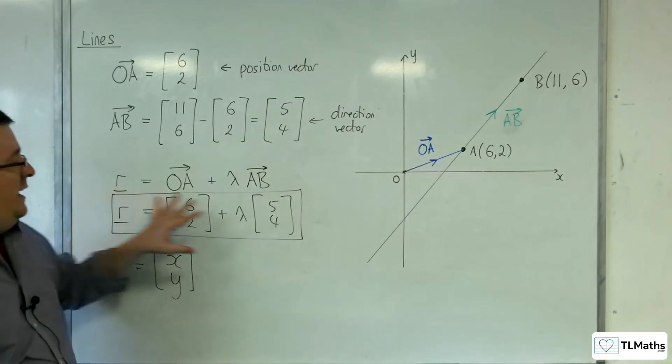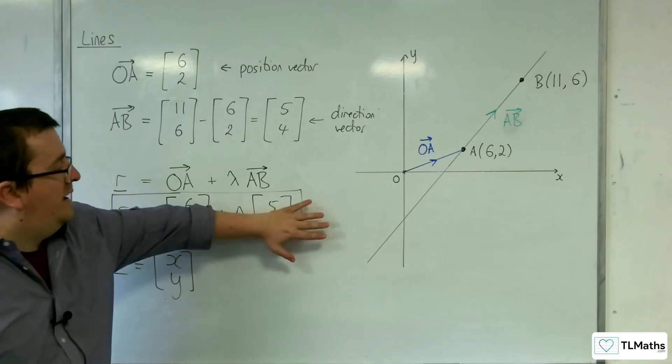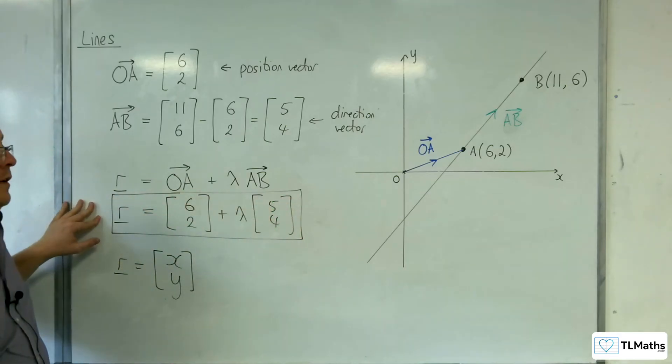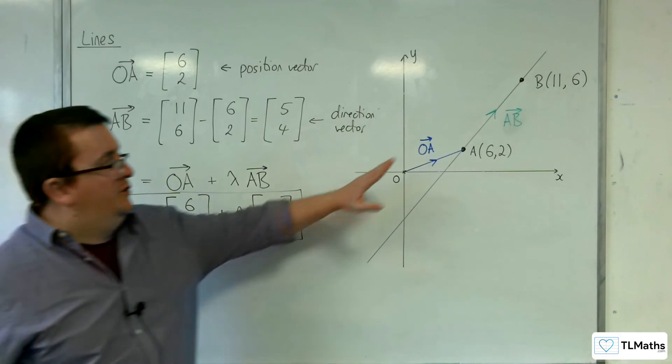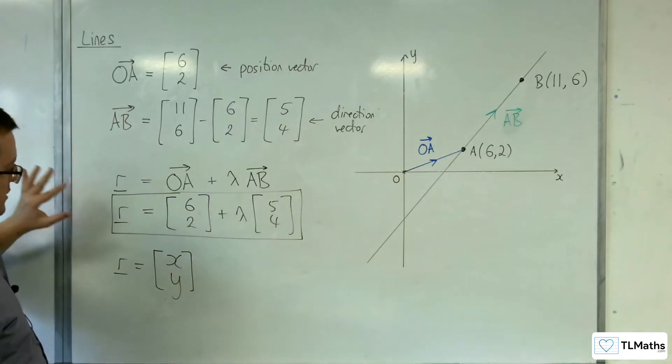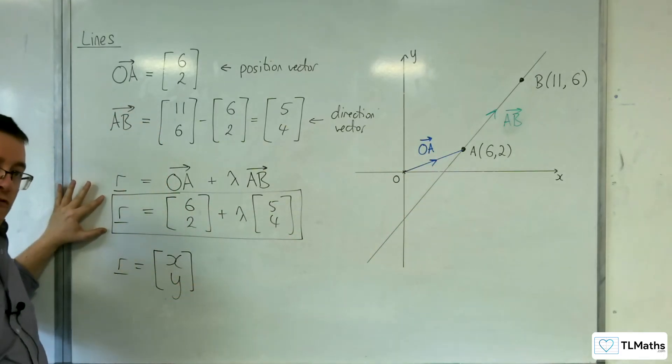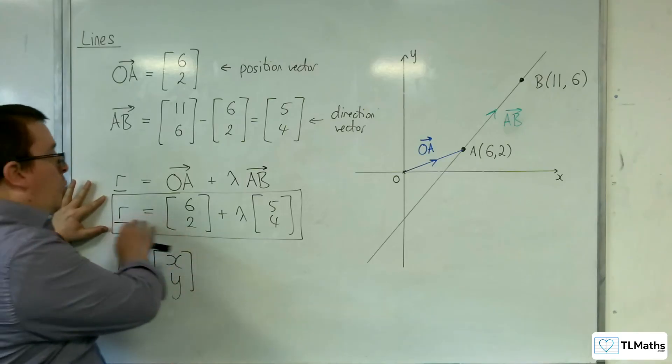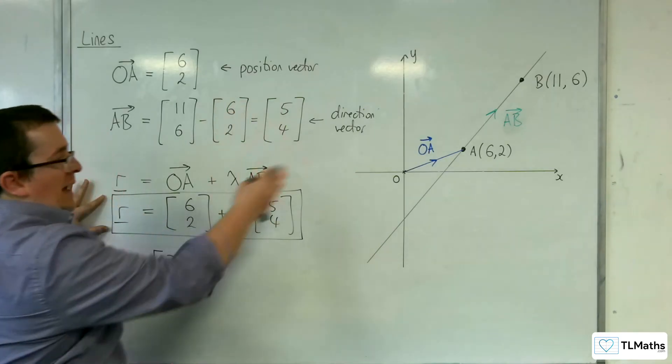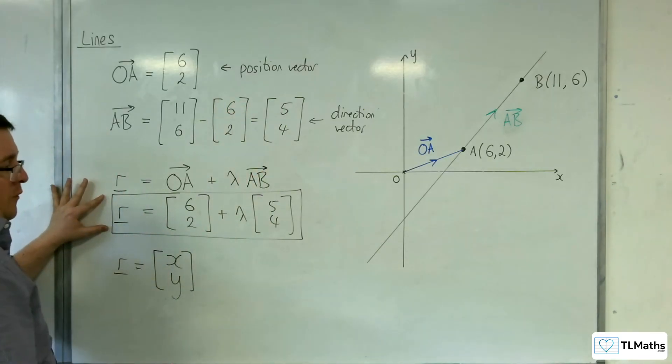So there isn't just one equation, one vector equation of the line that describes that. There could be any number of different variations of this. But that is one way to write down that line, and that will get me to any point on the line.